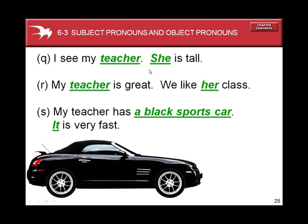I see my teacher. She is tall. She takes the place of teacher — that's the Subject Pronoun. My teacher is great. We like her class. The object pronoun is her — it takes the place of teacher; it's a female teacher. My teacher has a black sports car. It's very fast. It is the Subject Pronoun that replaces a black sports car.